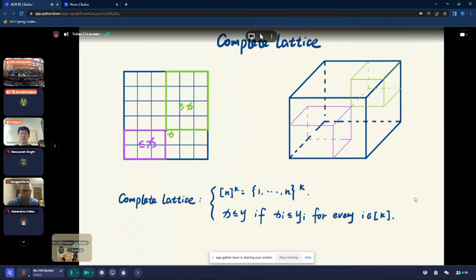The Tarski fixed point is defined on a complete lattice. Here, let's consider the complete lattice over a grid of n to the k. The order is defined as a natural partial order where for every two points X and Y, we say X is no more than Y if for every coordinate, X_i is no more than Y_i. Here's a quick picture to show what this order means. For example, we have an X in the 2D space, then the green points are the points that are greater than X and the points in the pink area are less than X. We have a similar picture in 3D.